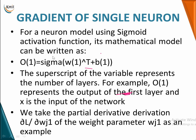You all know how a sigmoid activation function is written. You have output O of 1. Why am I giving this 1? O of 1 represents the output of the first layer. Since I am talking on one single neuron, the representation still matters, that's why I have written O of 1.